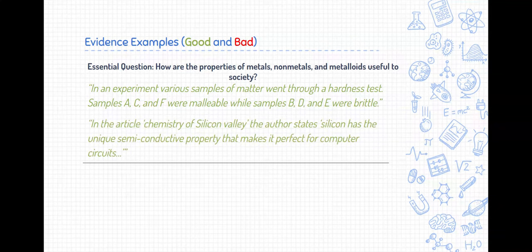Here's another example of evidence. This could also be part of the same essential question. In an article, The Chemistry of Silicon Valley, the author states, silicon has a unique semiconductive property that makes it perfect for computer circuits. So we went out, we did a little bit of research. We found an article that helps support our claim, which isn't written here, by the way, but it does help answer the question. So assuming that our claim relates to that.